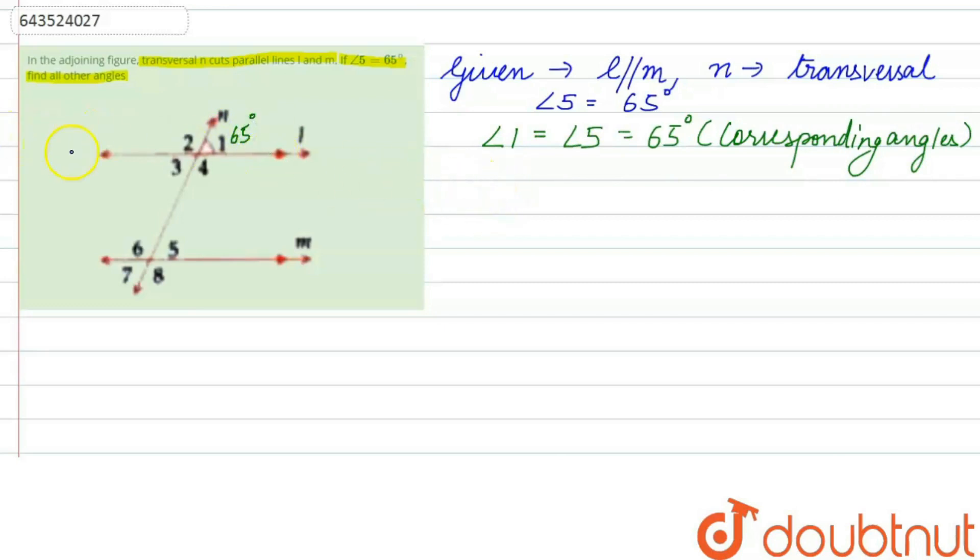Now let's find angle 2 with the help of angle 1. Angle 1 plus angle 2 equals 180 degrees because they form a linear pair. Substituting, 65 degrees plus angle 2 equals 180 degrees. Therefore, angle 2 equals 180 minus 65, which equals 115 degrees.